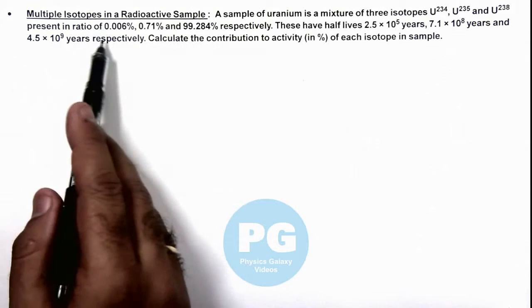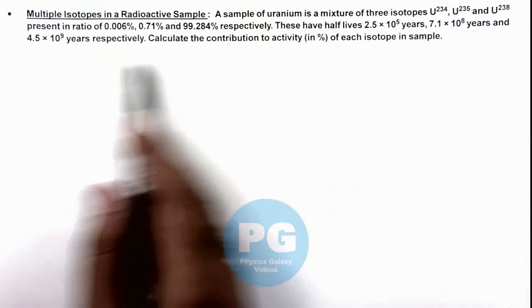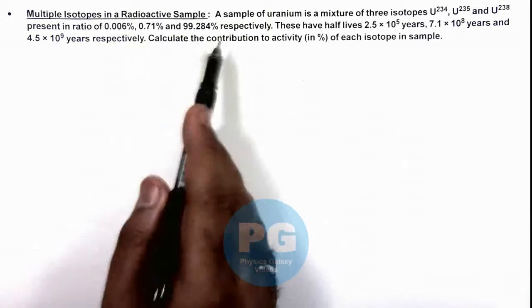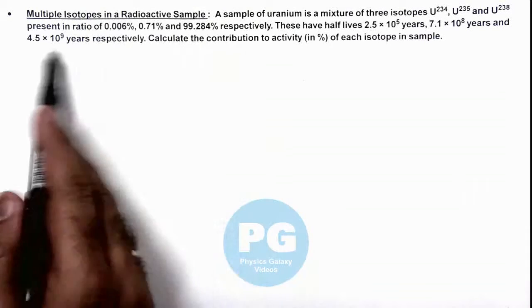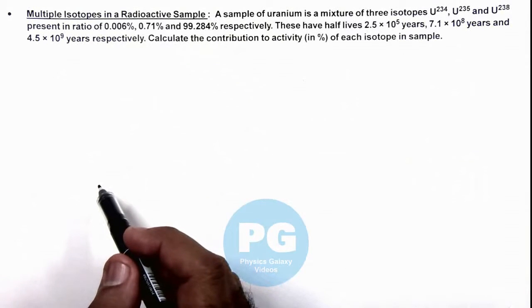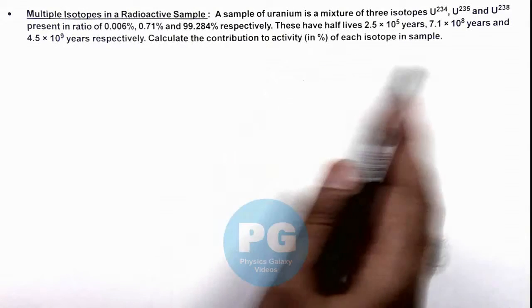Present in ratios of these values. Always remember whenever such ratios are given, these are always the mass ratios in a mixture. Half lives of these isotopes are also given here. We are required to calculate the contribution to activity of each isotope in the sample.